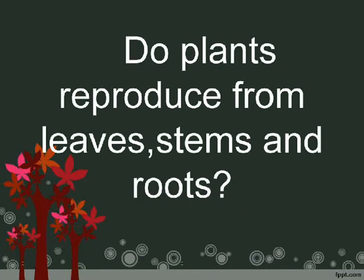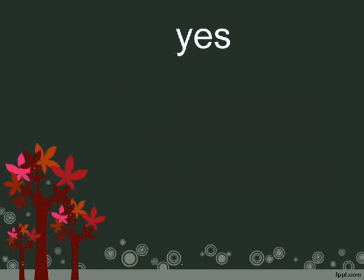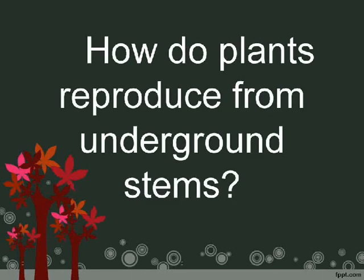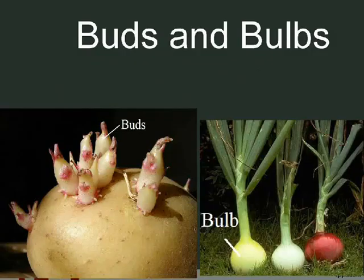Do plants reproduce from leaves, stems, and roots? Yes. How do plants reproduce from underground stems? Through buds and bulbs.